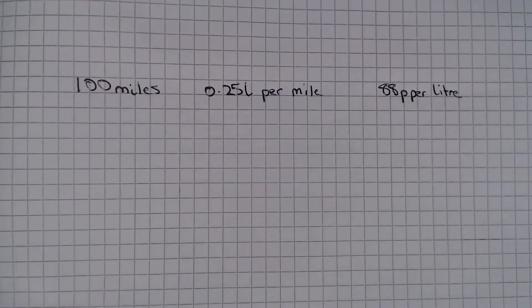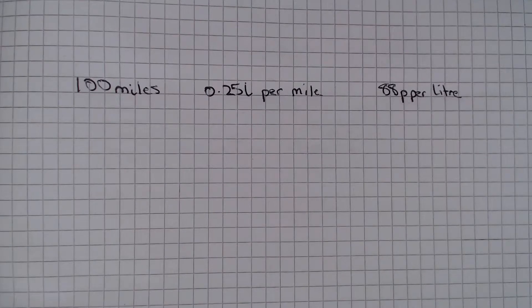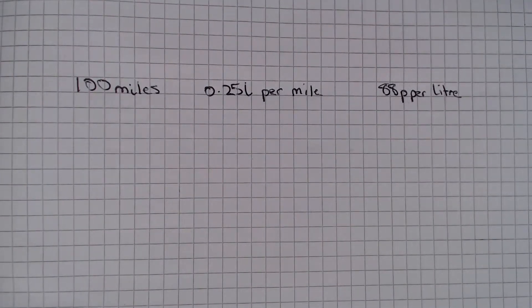In this question we are told that a minibus travels 100 miles. It uses 0.25 litres of fuel per mile and the fuel cost is 88 pence per litre.